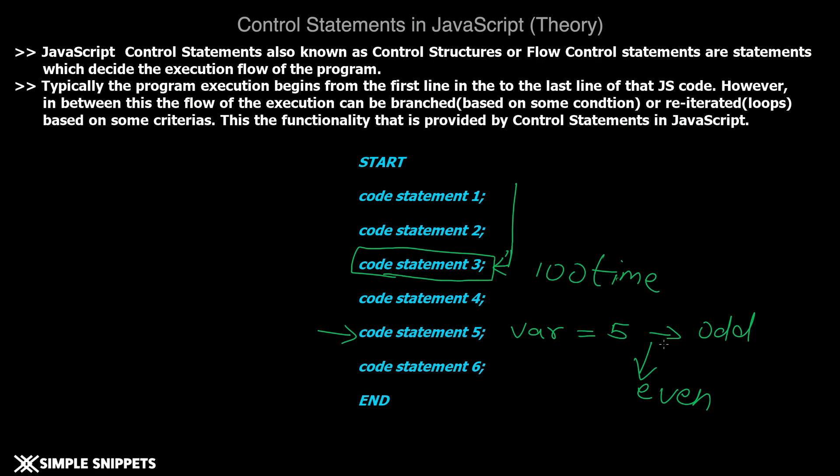So again, this is another example of flow control or control statements in JavaScript. In very basic terms, this is why we actually need control statements: so that we can perform certain activities n number of times or we can make certain decision-making kind of scenarios wherein we can use these control statements.